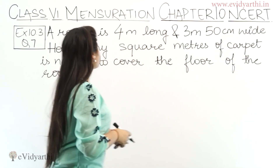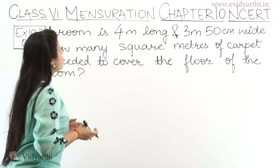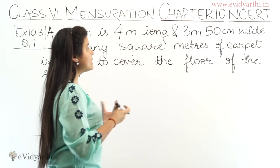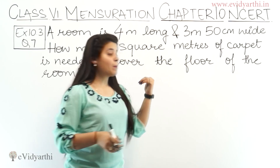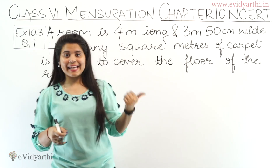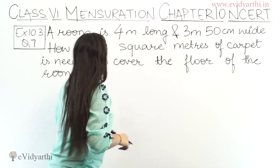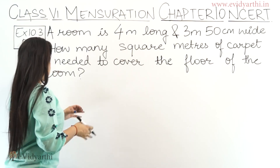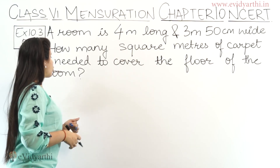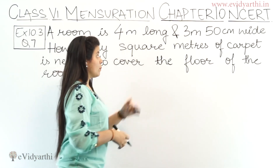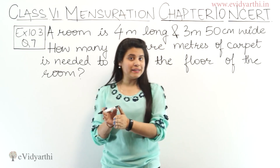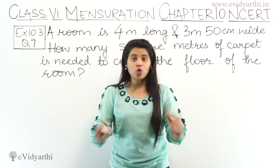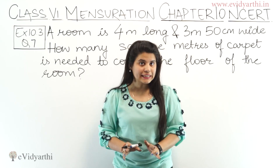In this question, a room is 4 meters long and 3 meters 50 centimeters wide. Aapko ek room ki length aur breadth given hai. How many square meters of carpet is needed to cover the floor of the room? Haam se poochte hai kitna square meter carpet chahiye room ki floor ko cover karne ke liye.